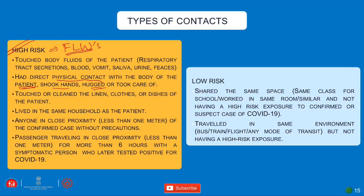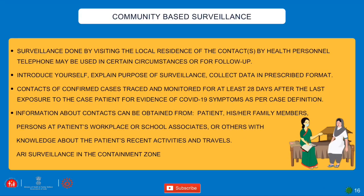Low-risk group includes: a person who shared the same space such as the same classroom or workstation in the same room; or a person who traveled in the same environment but does not meet high-risk criteria — for example, traveling in public transport where no one has symptoms or has tested positive for COVID-19.